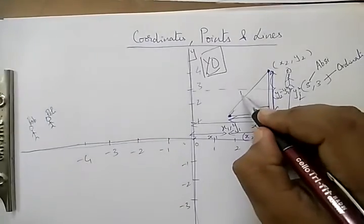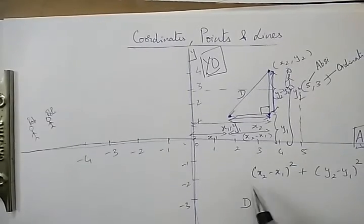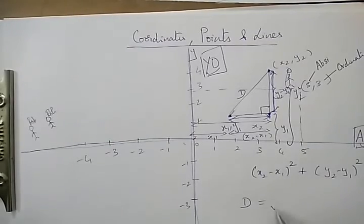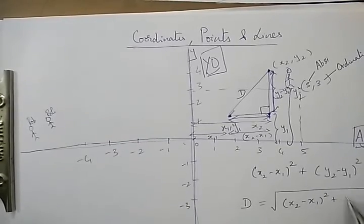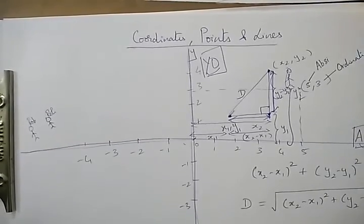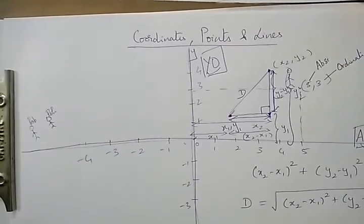So the sides are (x₂ minus x₁) whole squared, plus the other side is (y₂ minus y₁) whole squared. This is equal to - suppose this is the distance d - d squared. So I could write this as d equals, taking square roots on both sides...